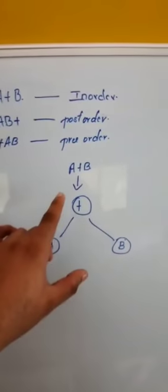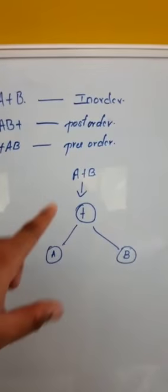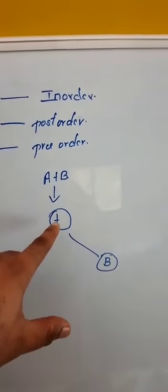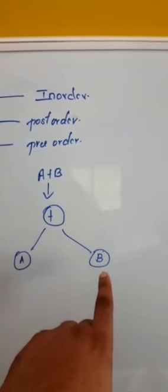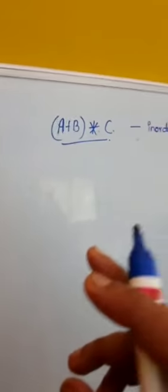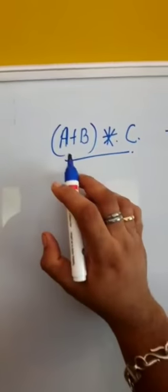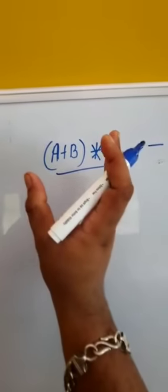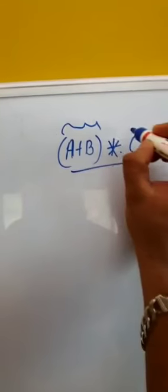We use a binary tree to represent expressions. For 'a plus b', plus is the root, a is the left node, and b is the right node. For the more complex in-order expression 'a plus b star c', we identify sub-expressions using brackets: 'a plus b' becomes one sub-expression, 'c' becomes another, and star becomes the root node.